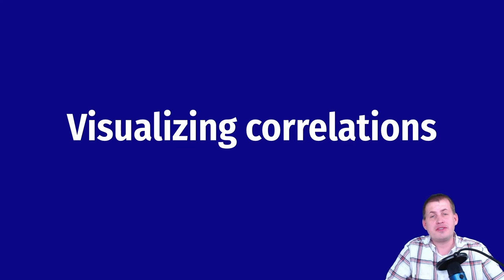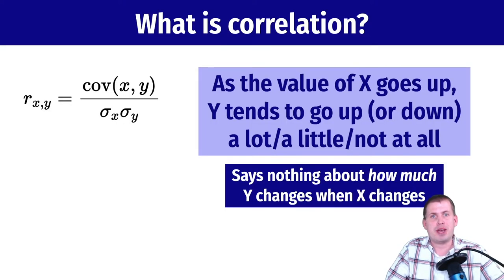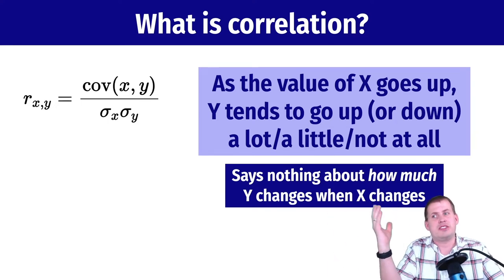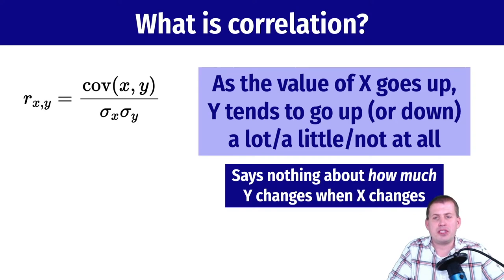Next we'll talk about how to visualize correlations between variables. This is a quick review of your earlier stats classes. Correlation is a mathematical principle that measures how closely two variables are related. The official formula is the covariance of two variables divided by their standard deviations multiplied together.